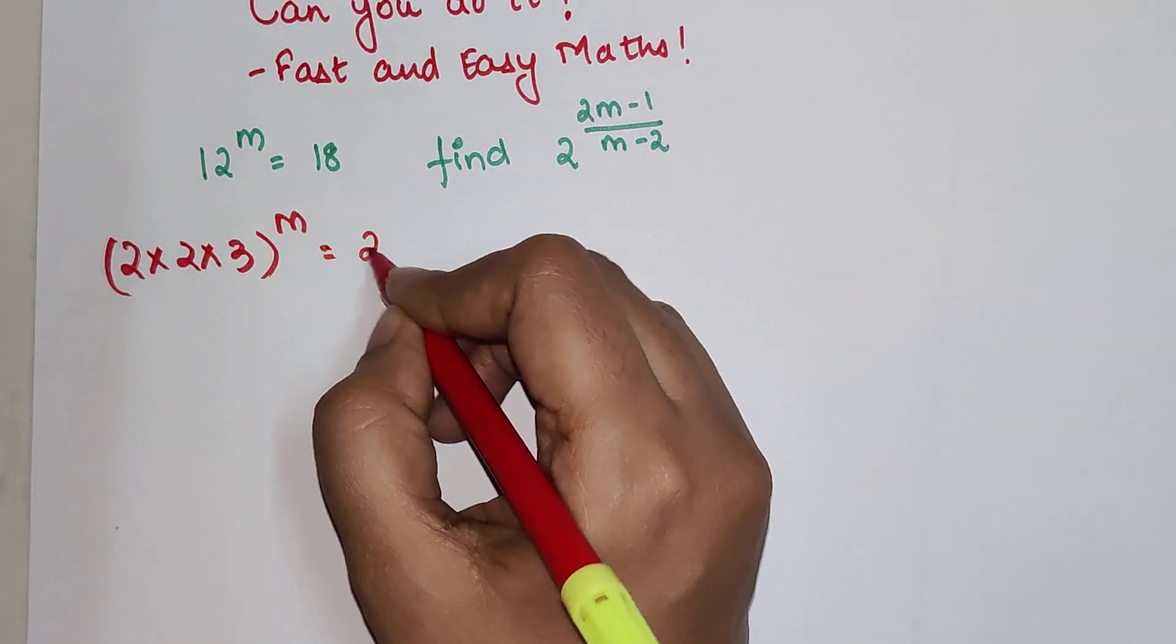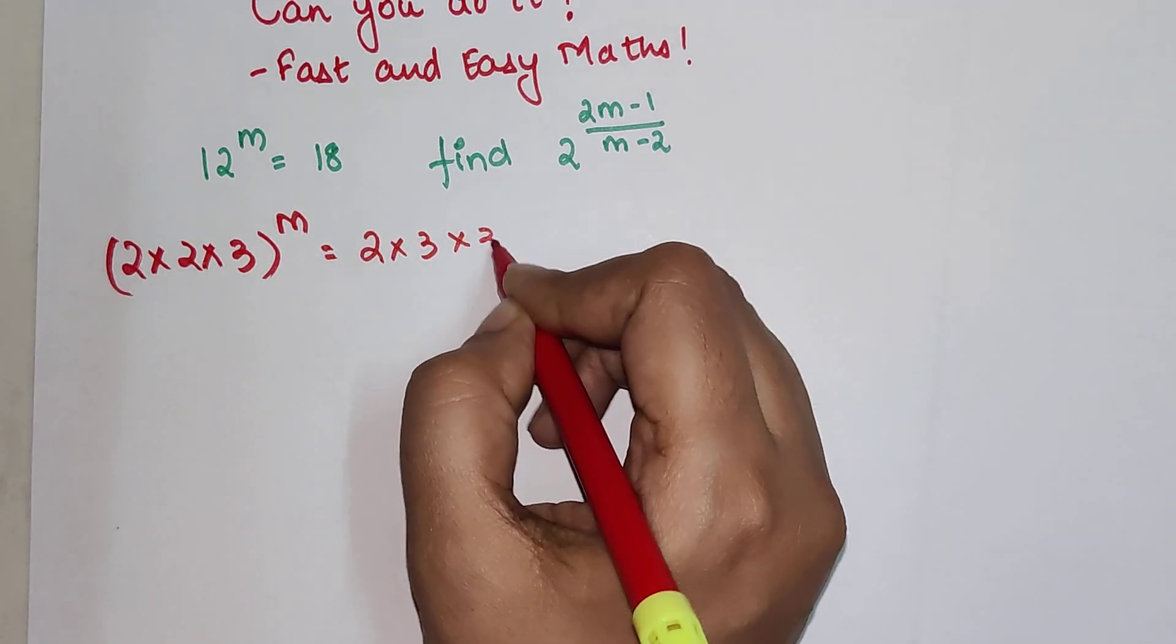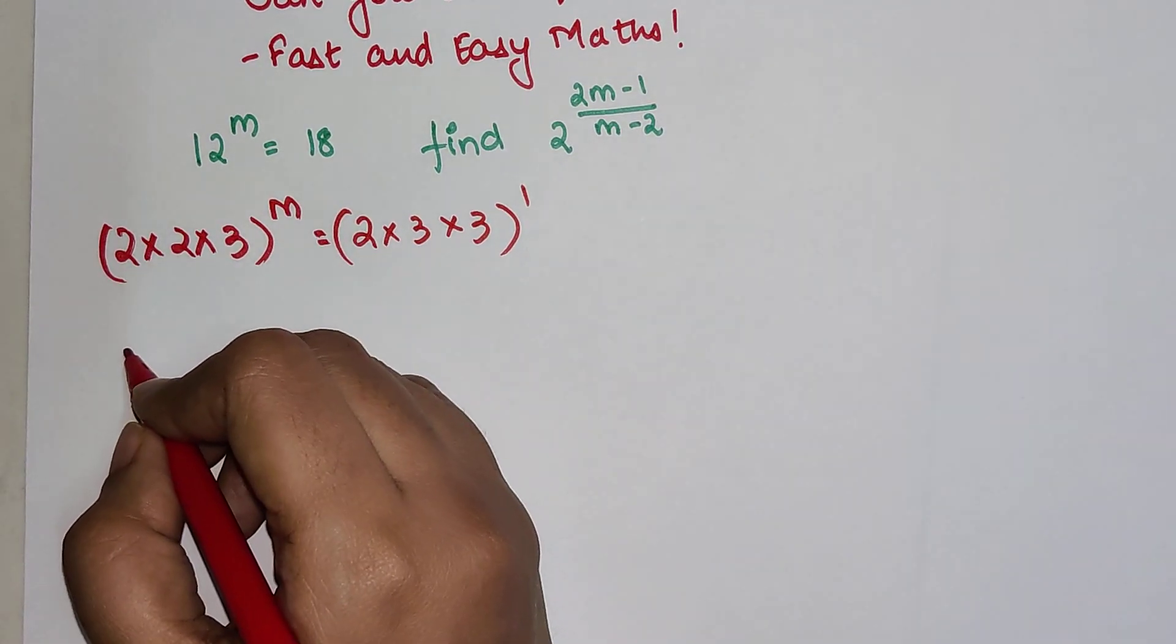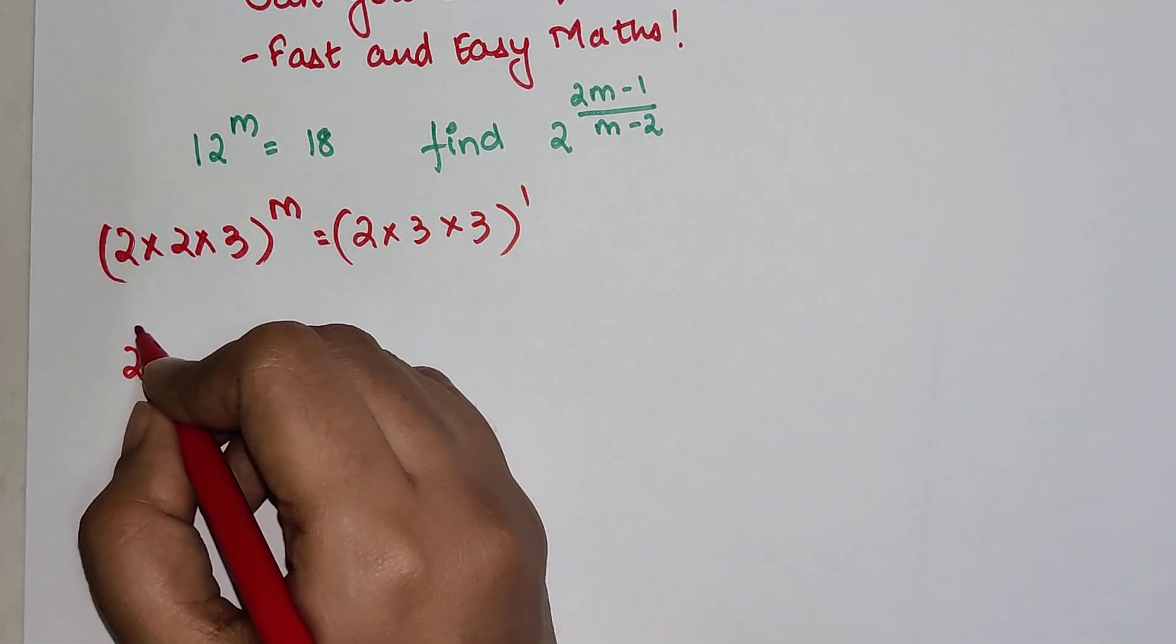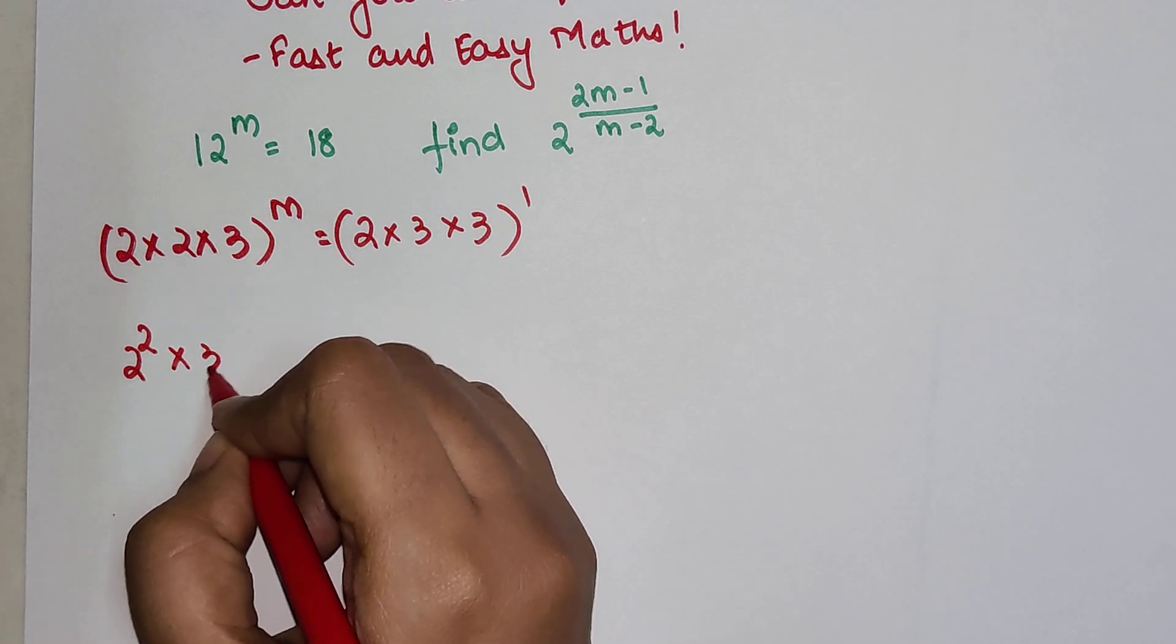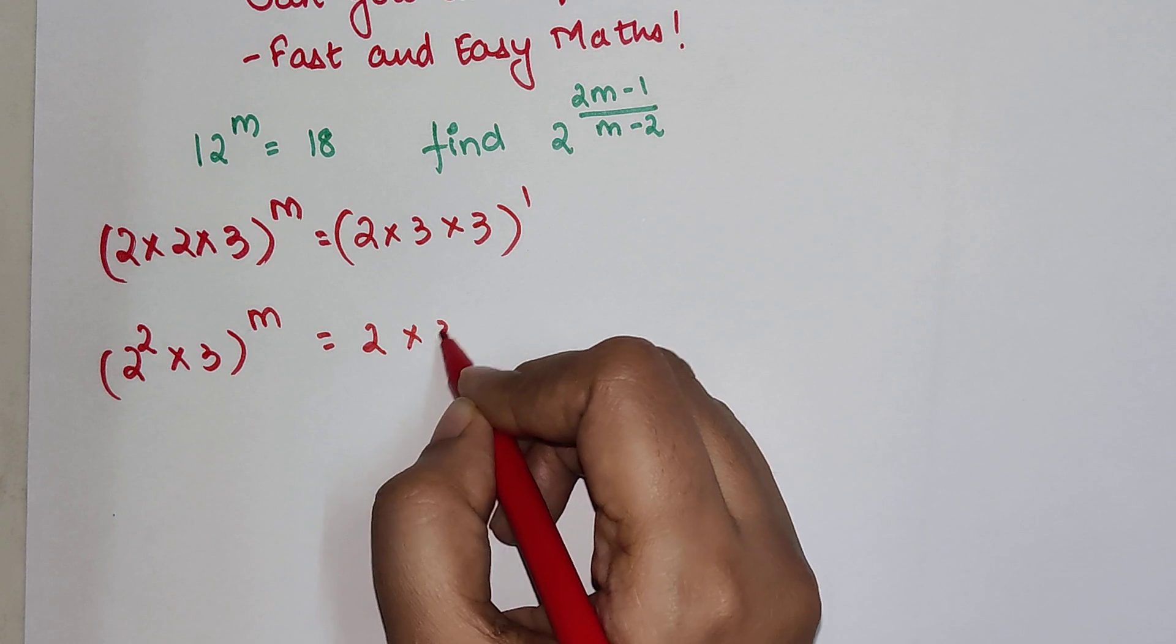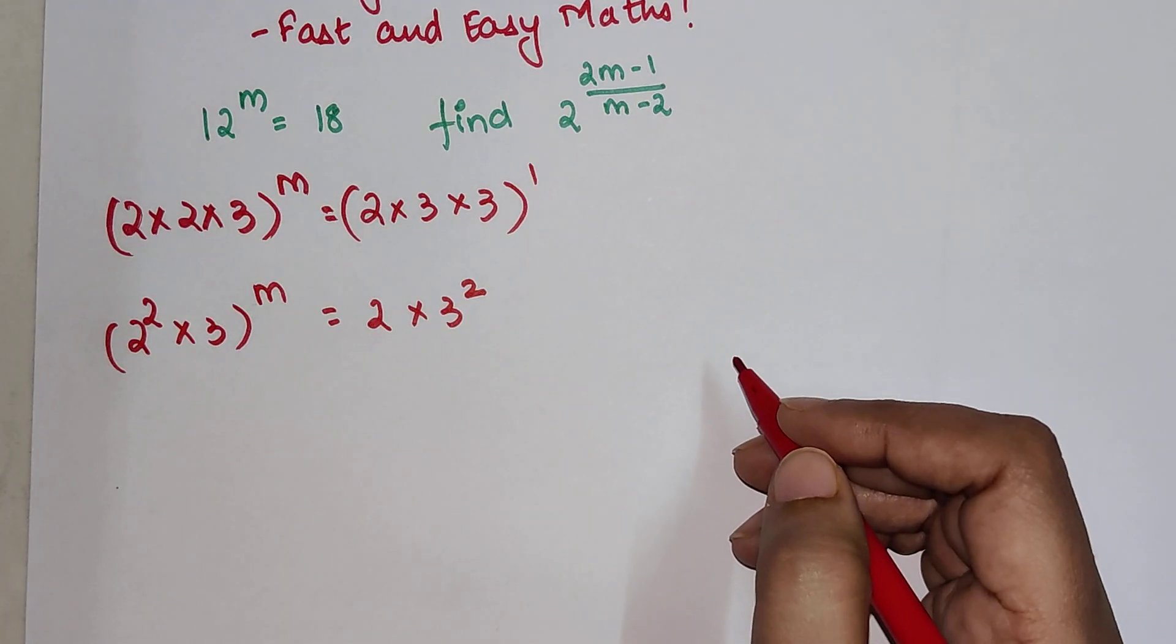And this is nothing but 2×3×3, the whole raised to 1. So I have 2 squared into 3, the whole raised to m, and this is 2 into 3 squared. So 2 squared into 3, the whole raised to m, and this is 2 into 3 squared.